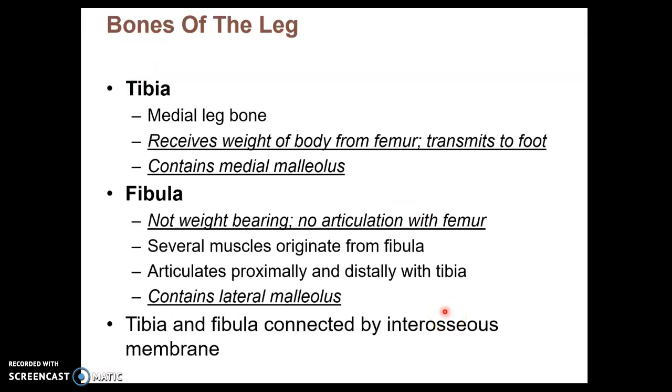Distal to the knee, we have the lower leg, sometimes just called the leg, which consists of two bones. The tibia is the medial leg bone, which contains the medial malleolus, while the fibula is the lateral lower leg bone, which contains the lateral malleolus. The tibia is much thicker than the fibula because it takes all of your weight, whereas the fibula does not take any of your weight. It is simply attached to the lateral end of the lower leg.